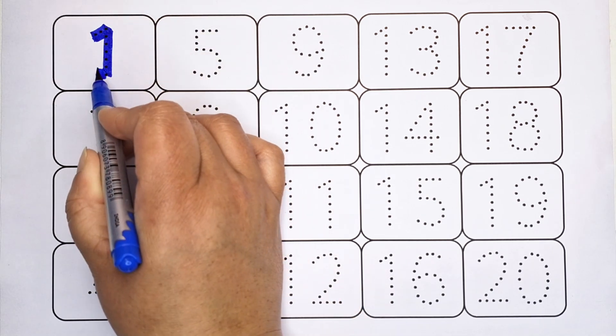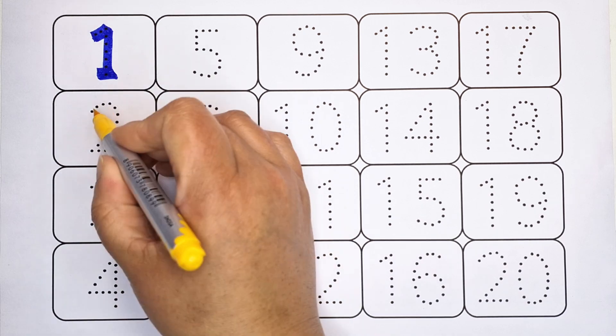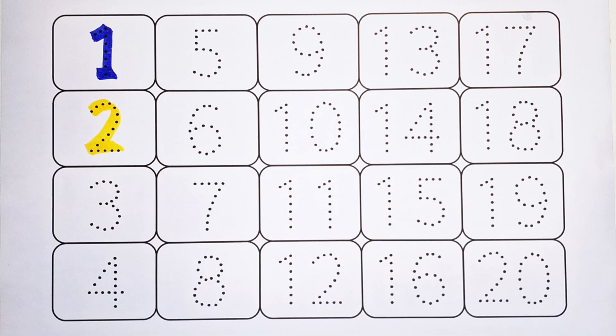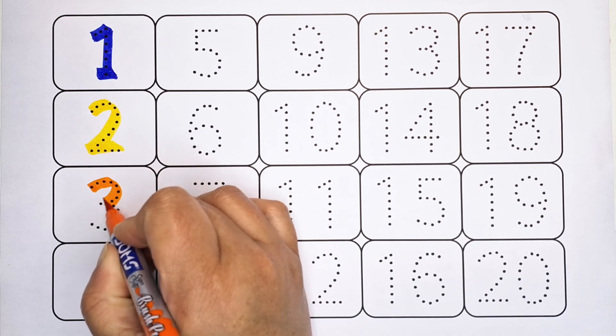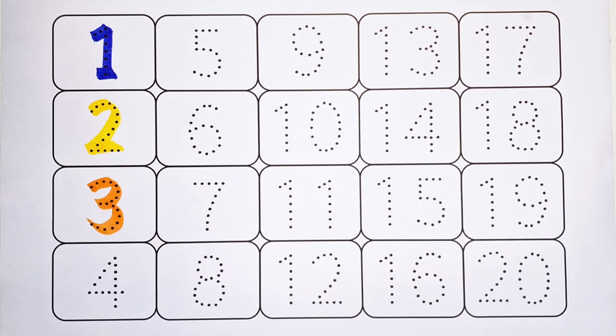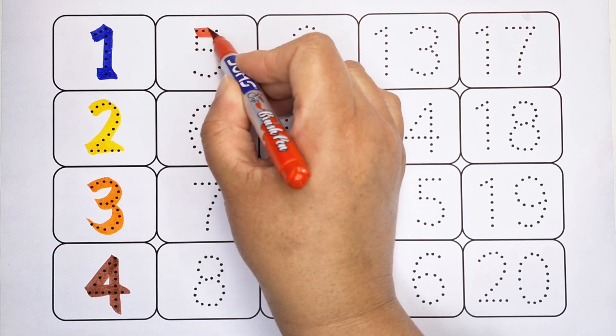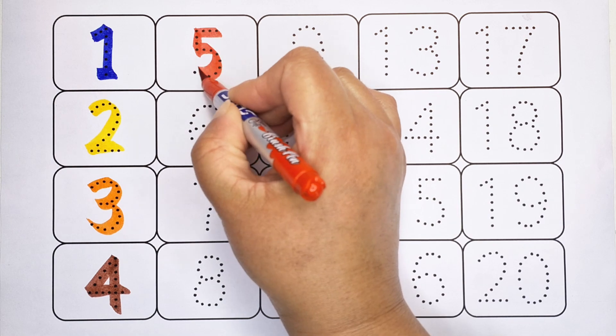One, number one. Two, number two. Three, number three. Four, number four. Five, number five.